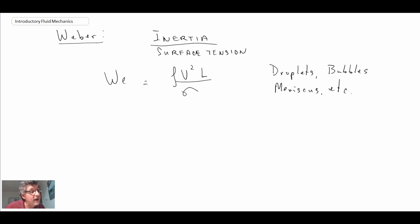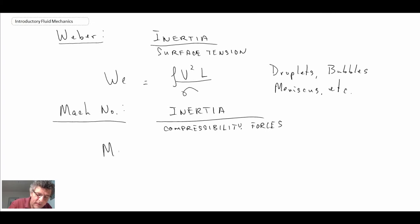Another one that we'll look at, the one that is involved with compressible flow, is the Mach number. This is inertia forces to compressibility forces. Here the Mach number, quite often we'll see it expressed as V over c. V would be the local velocity and c is the speed of sound at those conditions.